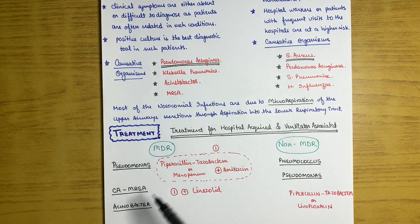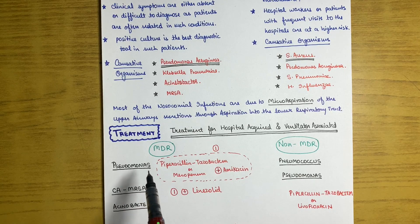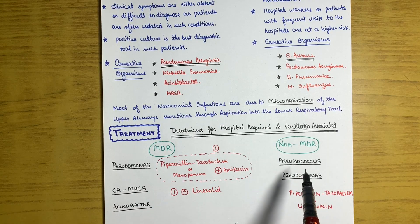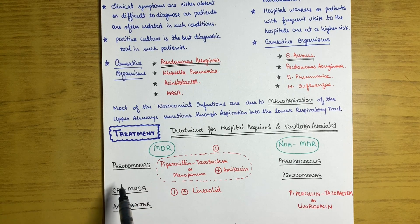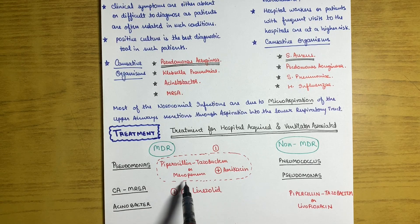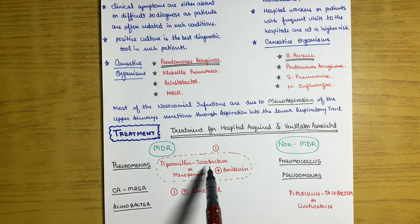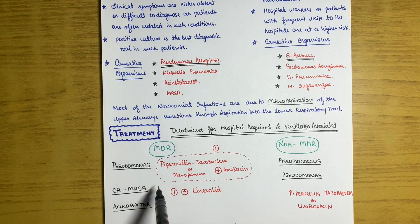Treatment for hospital-acquired and ventilator-associated pneumonia is divided into two categories: MDR and non-MDR. MDR means multi-drug resistant bacteria, and non-MDR means not multi-drug resistant. In case of MDR where the causative organism is Pseudomonas, the treatment of choice is piperacillin-tazobactam or meropenem with amikacin.